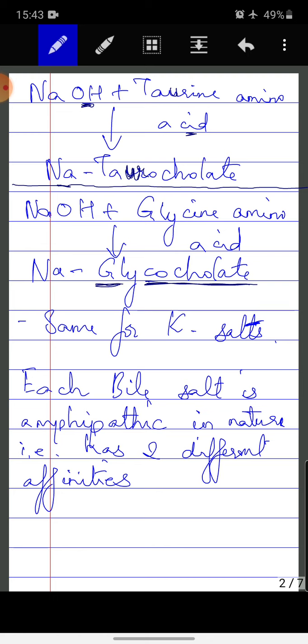So this is how the sodium salts of taurine amino acid and glycine amino acid are formed. Same for potassium salt. Potassium hydroxide plus taurine amino acid and potassium hydroxide plus glycine amino acid.